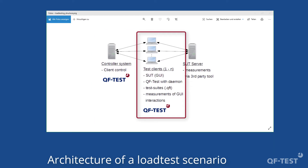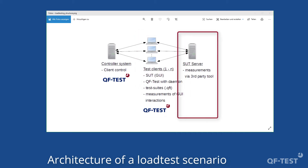Here we see various test systems which are used to generate the system load. On those systems, the system under test and QF-Test need to be installed, and the test scenarios using the UI will be performed there. All measurements taken from the test system itself, like end-to-end times and any other test system based logging, can be found there. On the right there is a block SUT server, which stands for application servers involved in the architecture of the system under test.